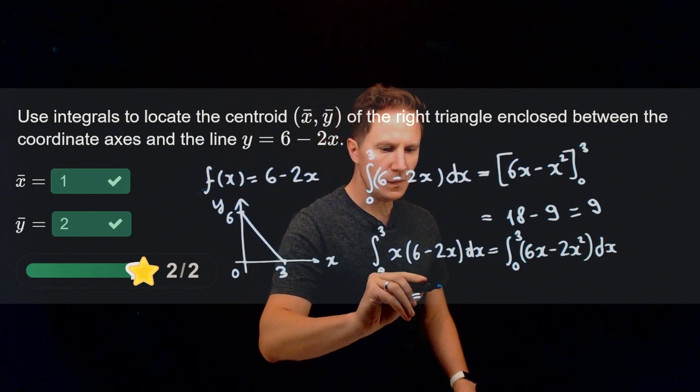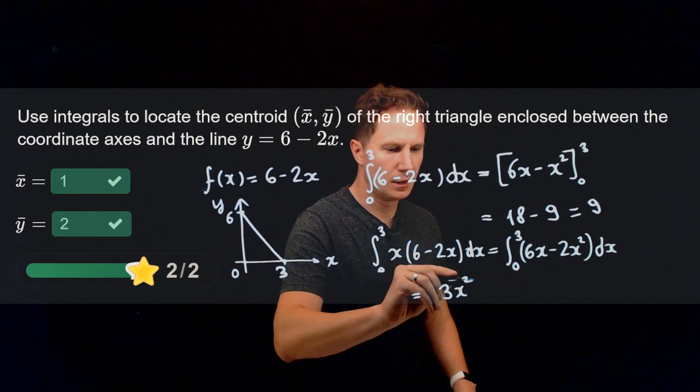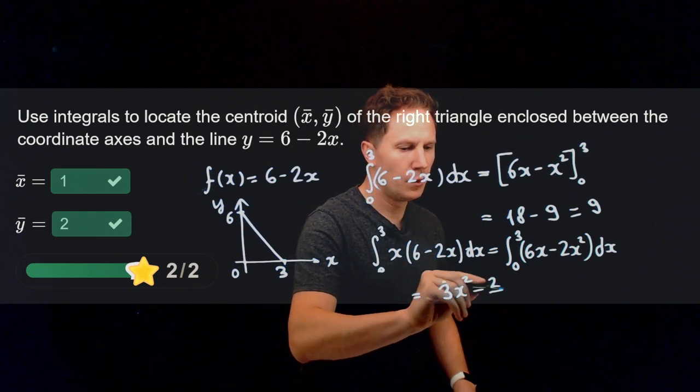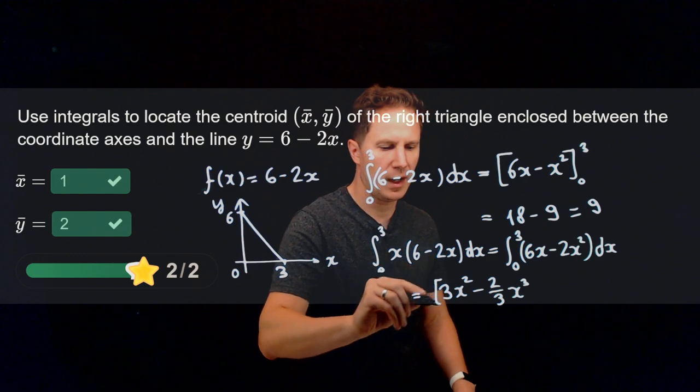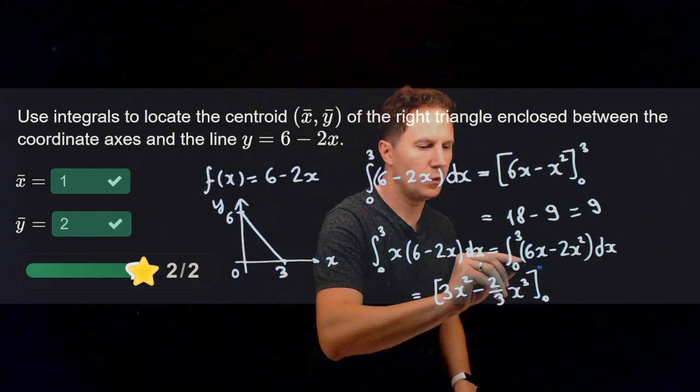Now that integral can be written as 3x squared minus 2 thirds of x cubed as x changes from 0 to 3.